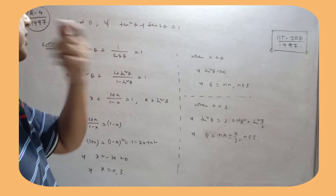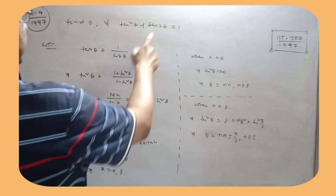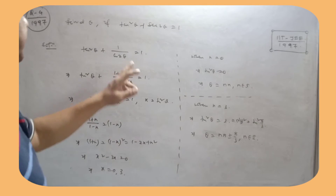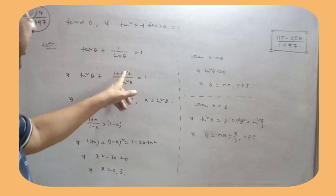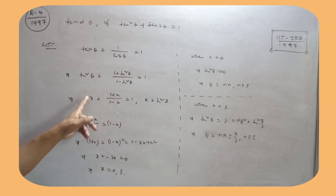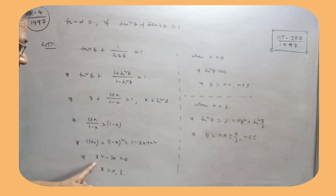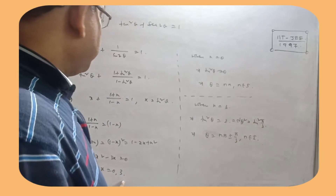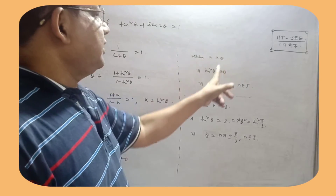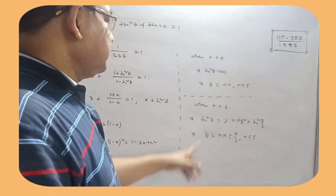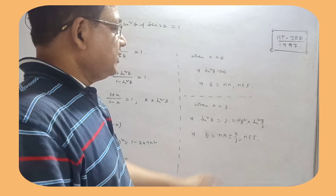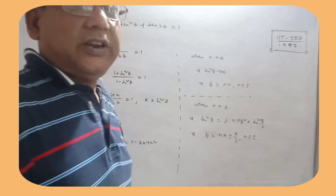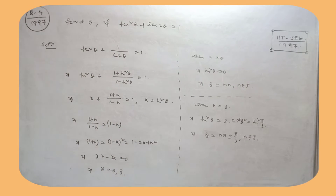If tan²θ + sec2θ = 1. sec2θ को 1/cos2θ लिखा — cos2θ in terms of tan: (1 − tan²θ)/(1 + tan²θ). tan²θ को x consider किया — x को transpose कर दो, cross multiply करो — relations मिला: x = 0 and x = 3. जब x = 0 है, tan²θ = 0, so θ = nπ, n belongs to integers. When x = 3, tan²θ = 3 = tan²(π/3), so θ = nπ ± π/3, using tan²θ = tan²α → θ = nπ ± α.